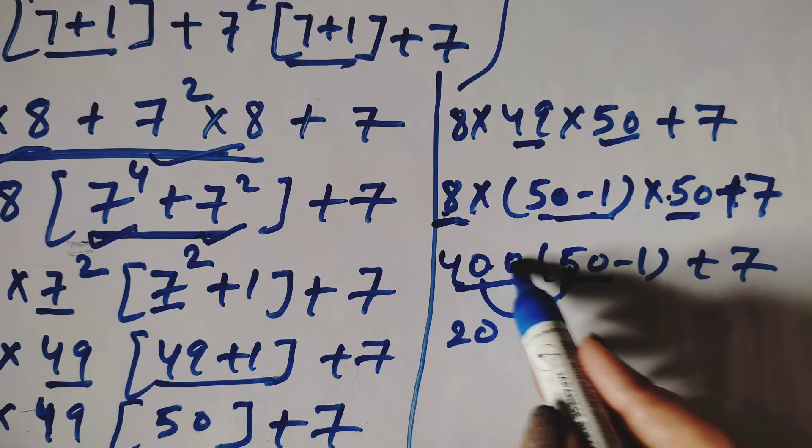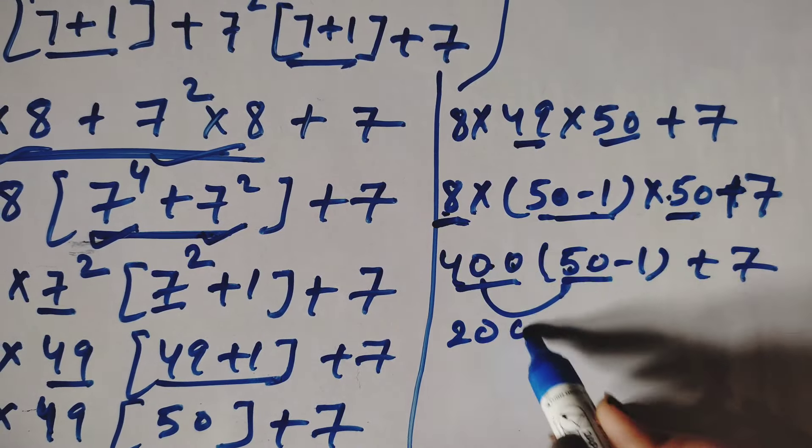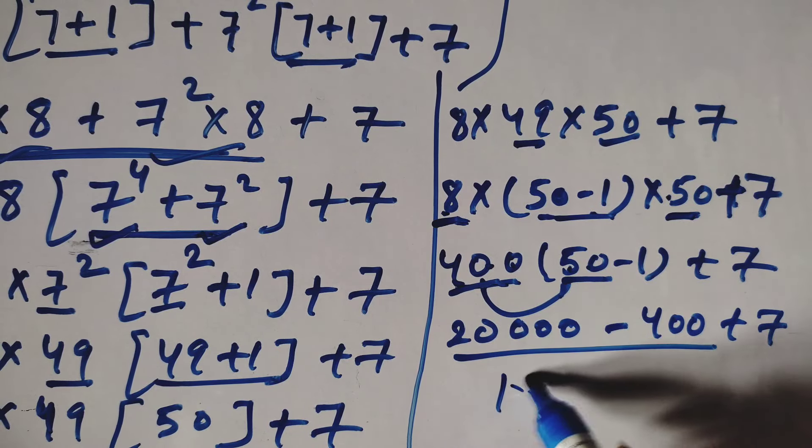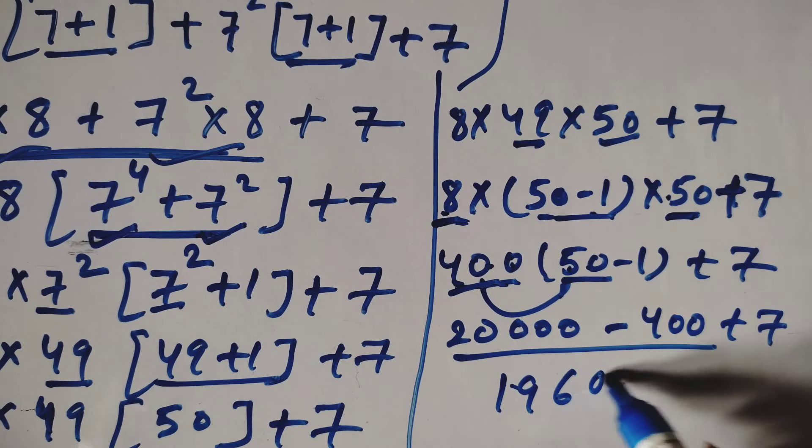You can see 8 into 50: if you multiply 8 into 50, we get 400. So we have 400 times (50 minus 1) plus 7.